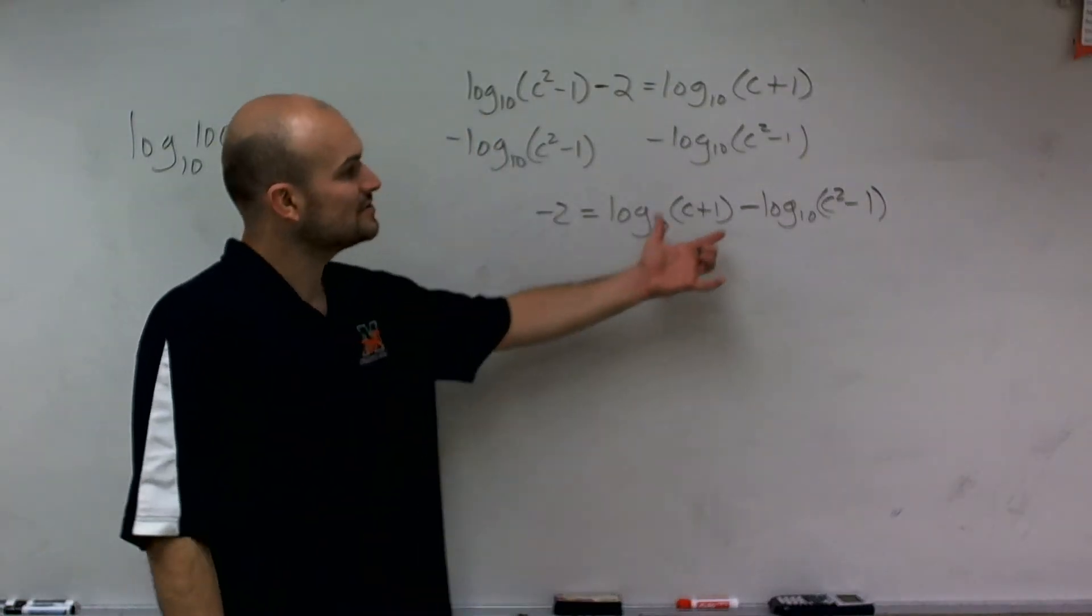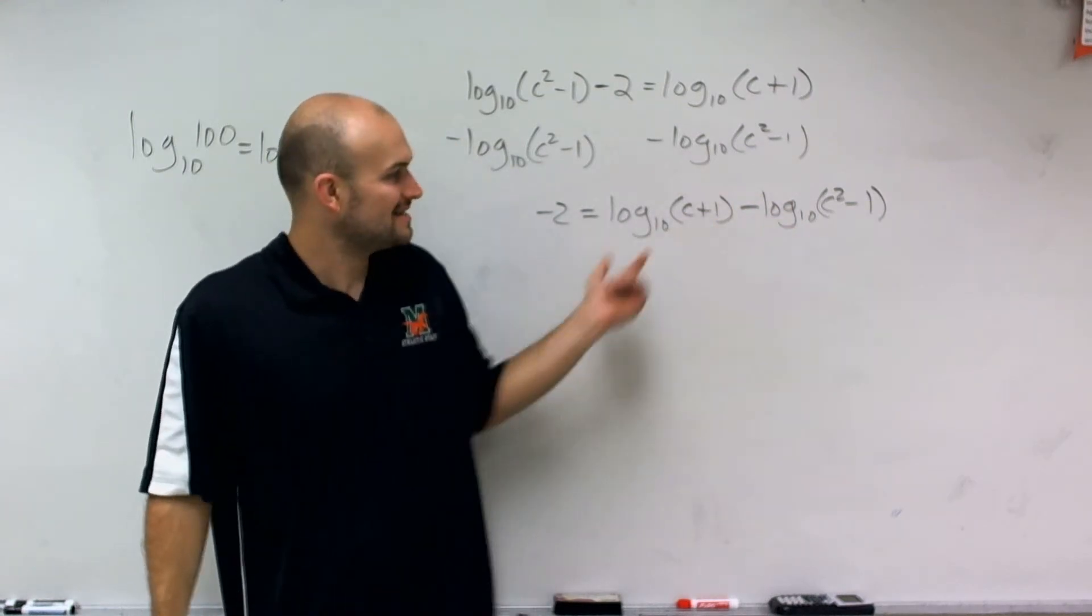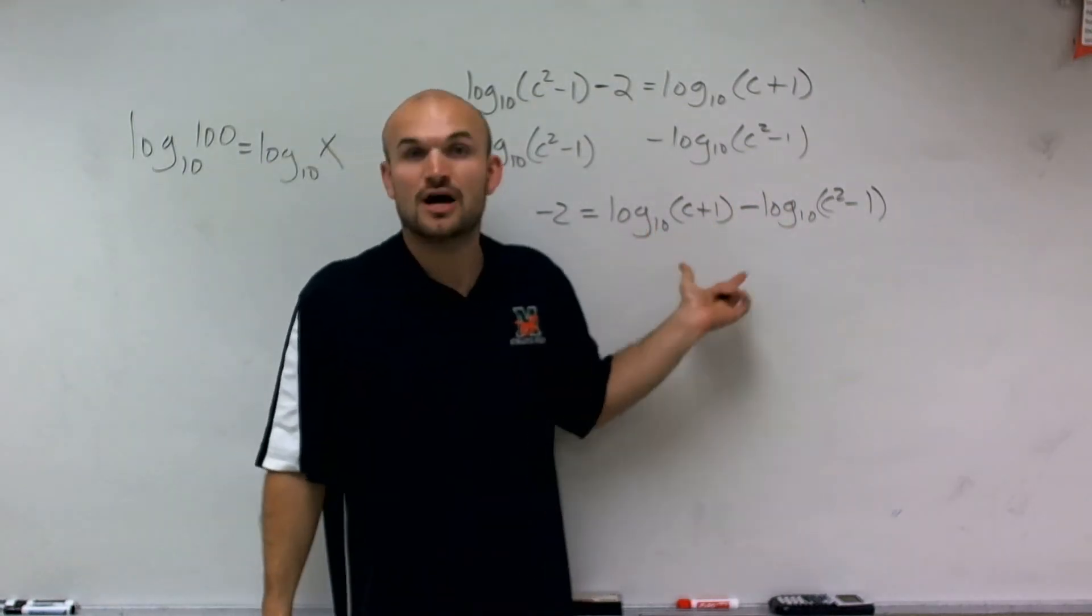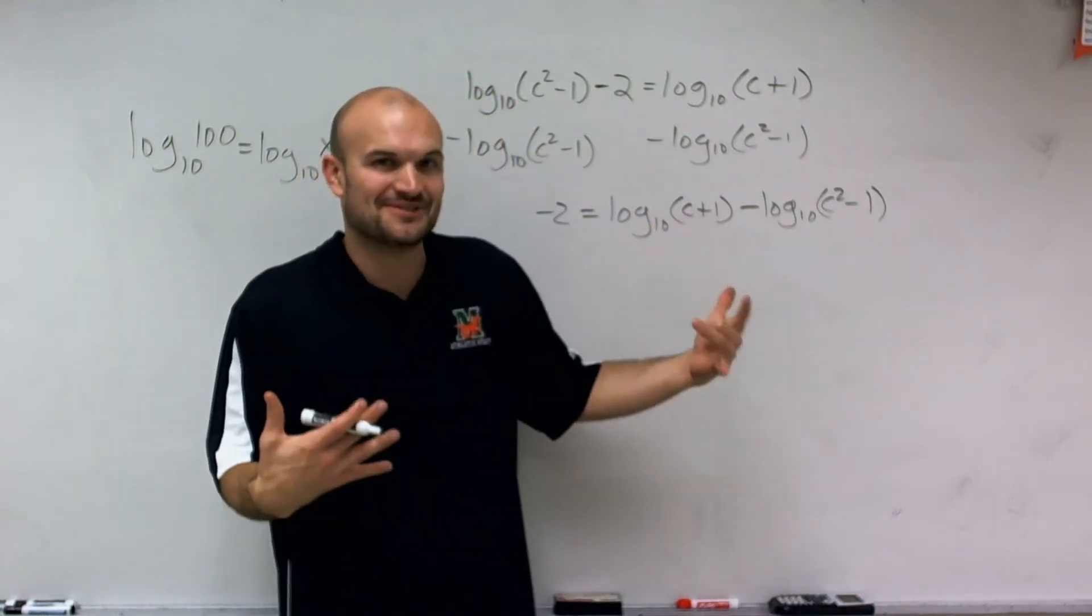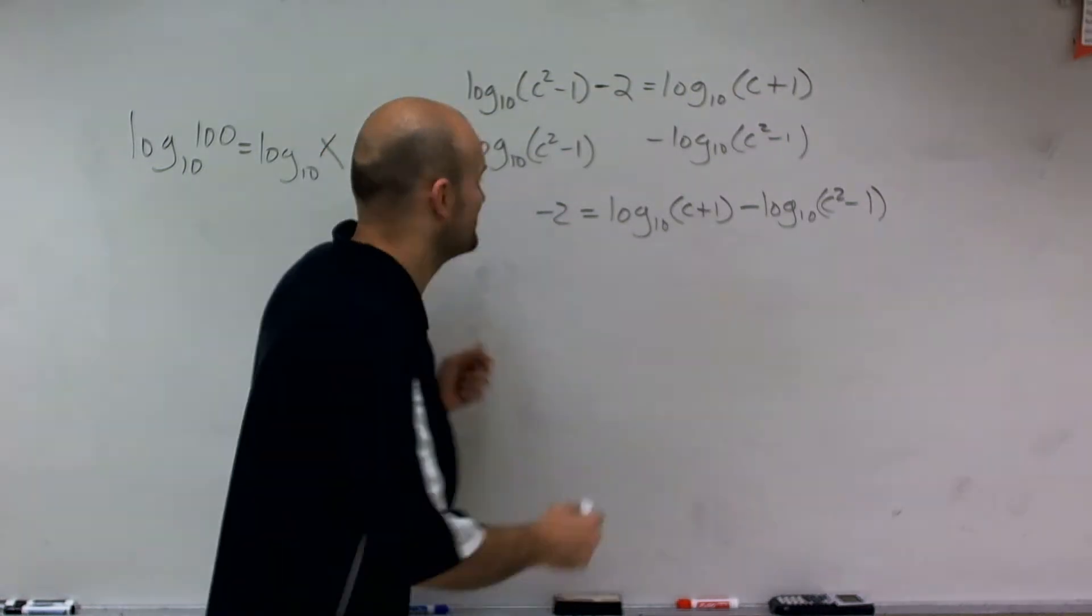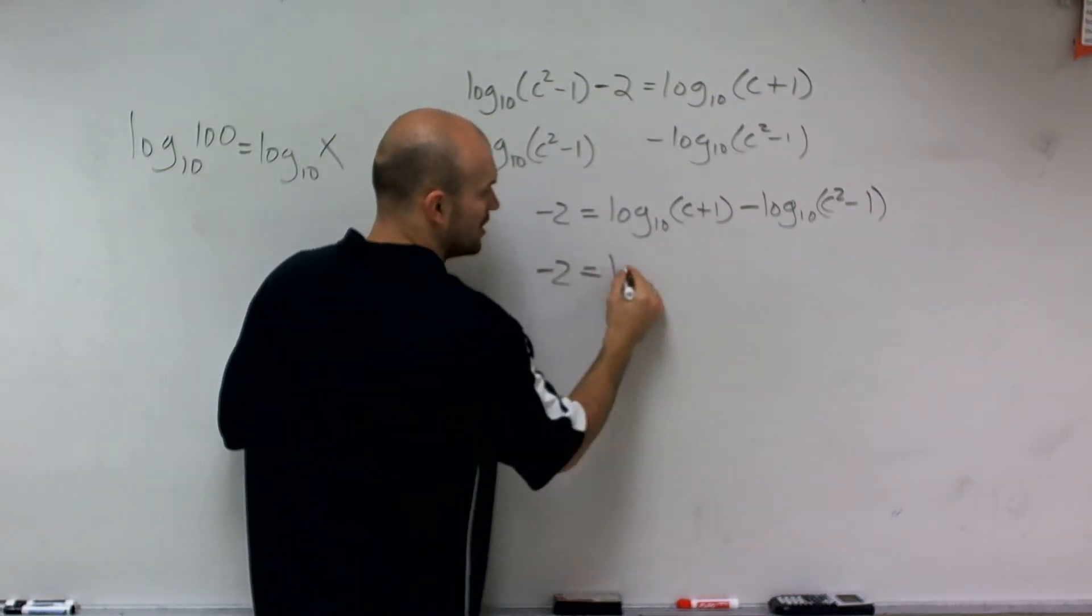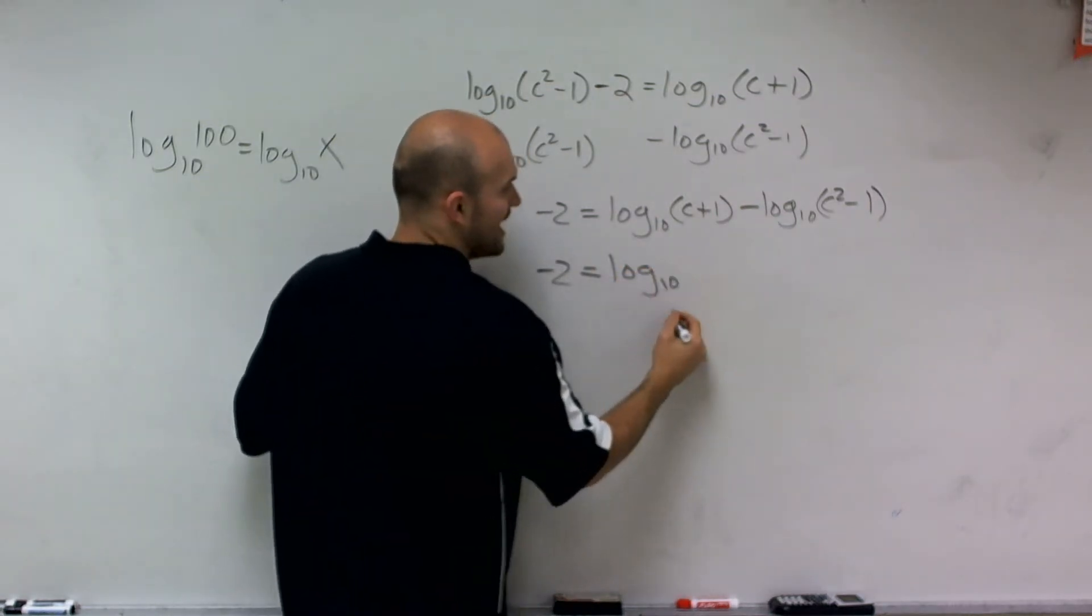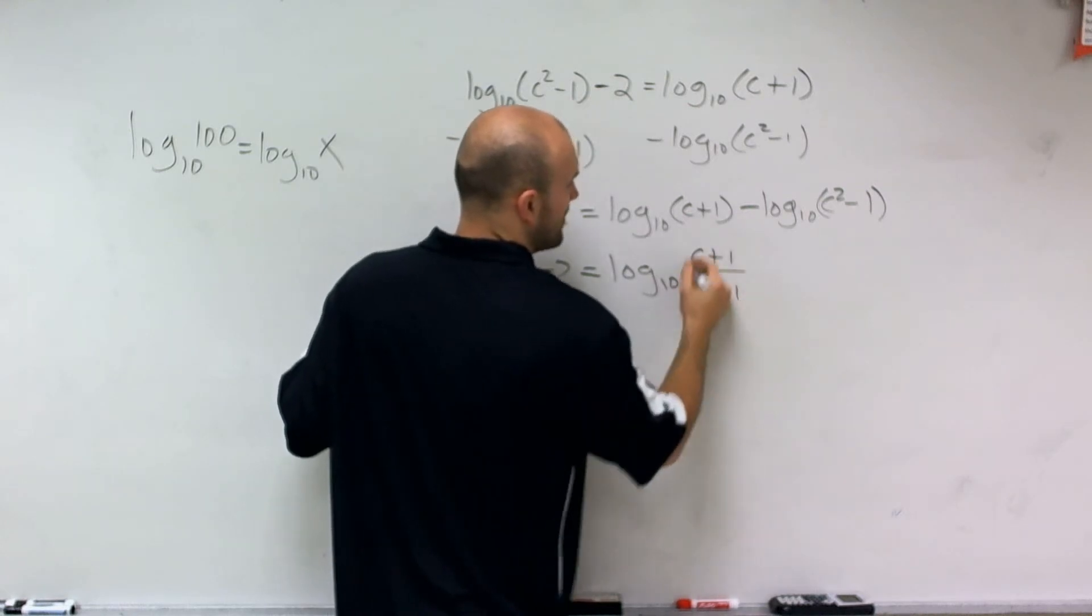Well, now what I can use is my rules of logarithms to say when I have the difference of two logarithms, I can rewrite that as the quotient of one single logarithm. So I can rewrite this, as long as they have the same basis, as one single logarithm as log base 10 of c plus 1 divided by c squared minus 1.